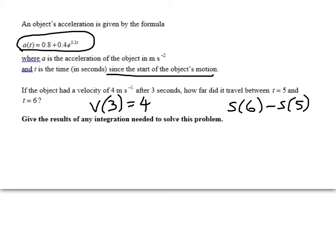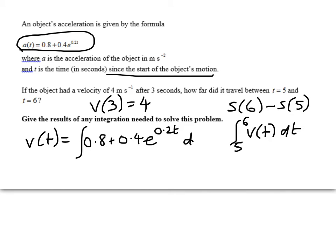The other way you could do it is by saying, hang on, s is just the antiderivative of velocity, so I could work it out like this. In the interest of time, I'm just going to get on with it. So v of t is the first thing we're going to find, so we anti-differentiate acceleration with respect to t, and that gives me 0.8 t plus, it'll still be e to the 0.2 t. If I differentiate that, I'll get 0.2, but I want to get 0.4, so it's going to be 2 e to the 0.2 t plus c.